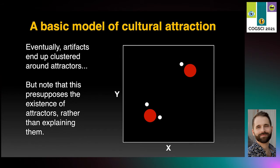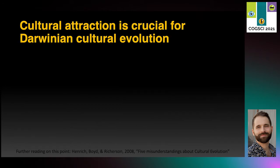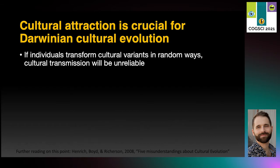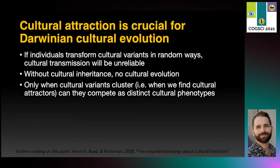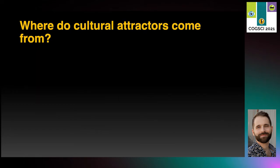But notice that this model treats cultural attraction as just another form of natural selection, without actually explaining where these forces of selection would come from. This is an important gap in our knowledge because cultural attraction effects are crucial for the Darwinian evolution of culture. If individuals transform cultural variants in random ways, cultural transmission will be unreliable — that means there's no cultural inheritance, which means no cultural evolution. Only when cultural variants cluster, meaning when we find evidence of cultural attractor points, can they compete as distinct cultural phenotypes. So where do cultural attractors come from?